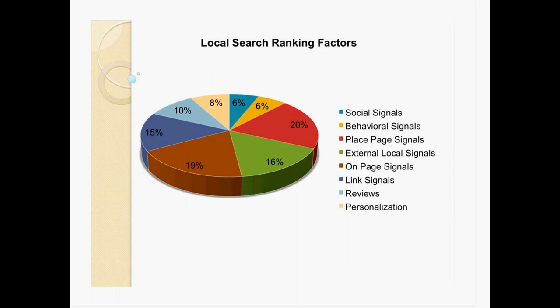Let's look at these ranking factors. The major ones are place page signals, external local signals, and on-page signals. We have a whole variety of smaller ones from social to personalization. Also important is that local has become such a crucial part of Google search. You have the carousel now with interactive Google Maps, and Google+, which is becoming more and more integrated every month. There are recent integrations with hashtags — for example, hashtag Schweiky Media in Google search will pull up related Google+ content on the right-hand side. And Google Places is just huge for organic ranking. This data is from Moz.com's 2013 search ranking factor survey.